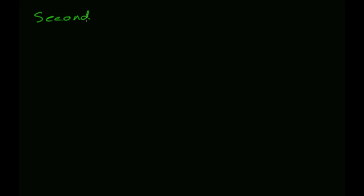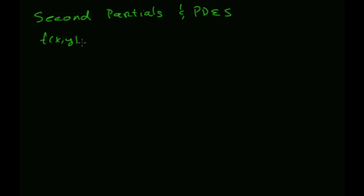This video is on second partials and PDEs. Every multivariate function of two variables is going to have four second partial derivatives. So let's take an example here: x cubed plus x squared y cubed minus 2y squared.